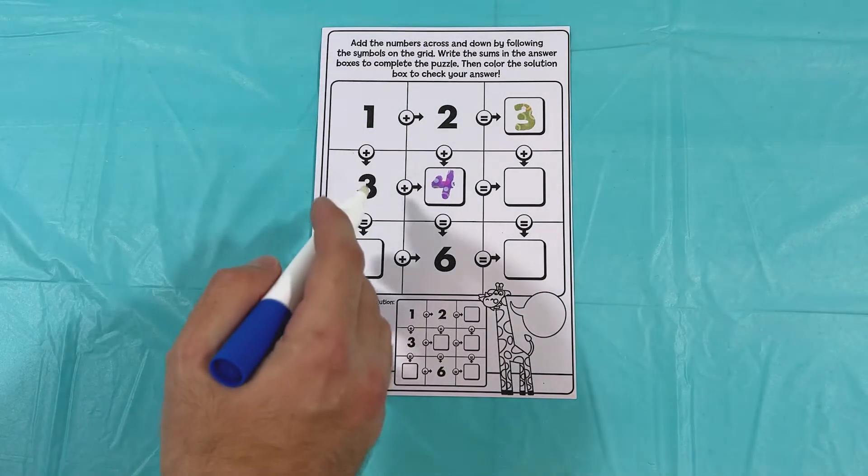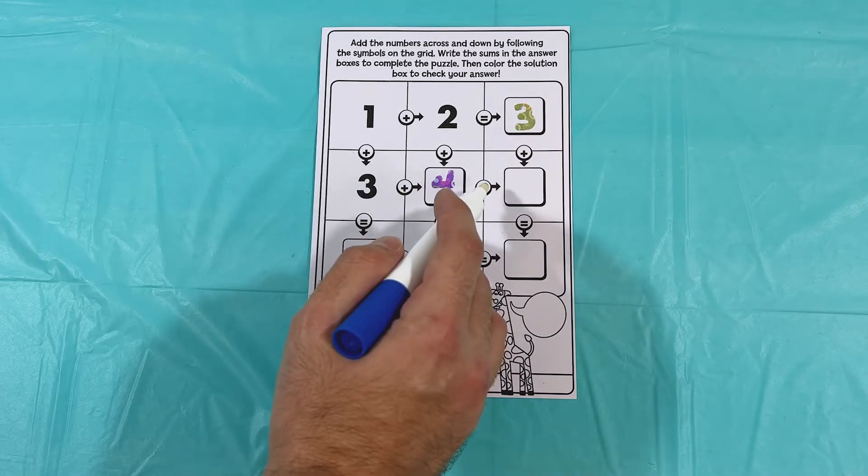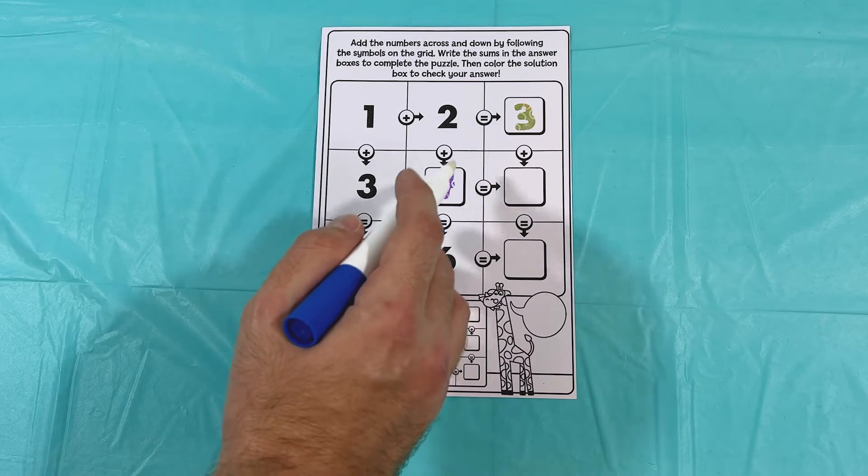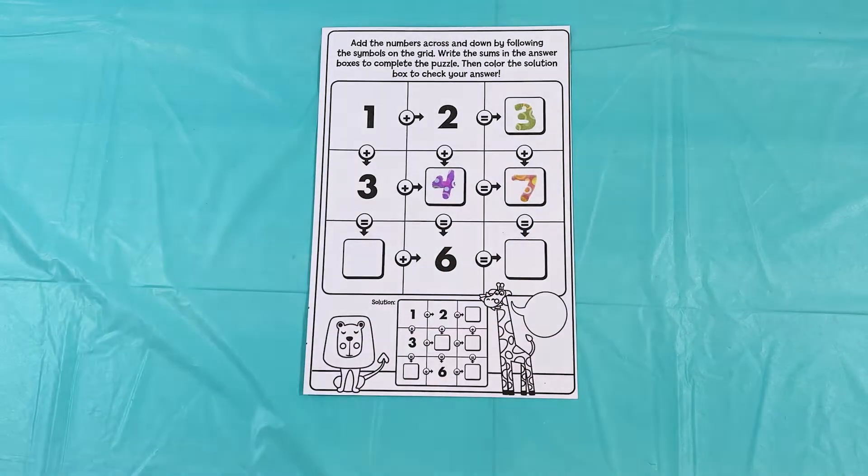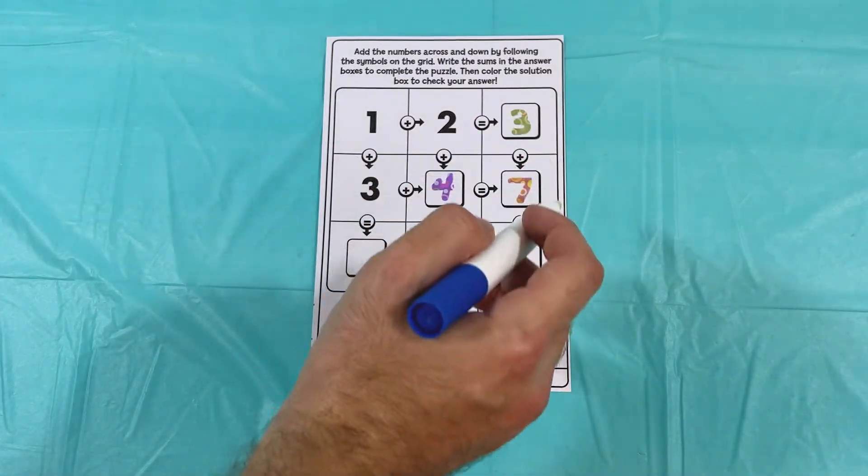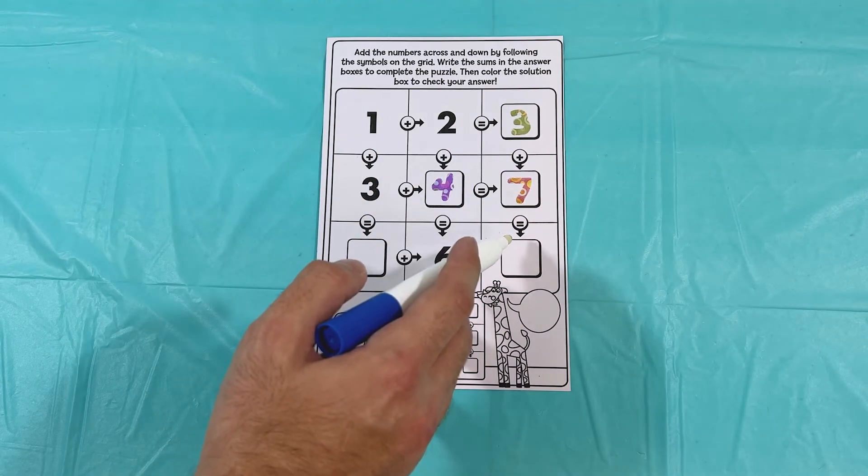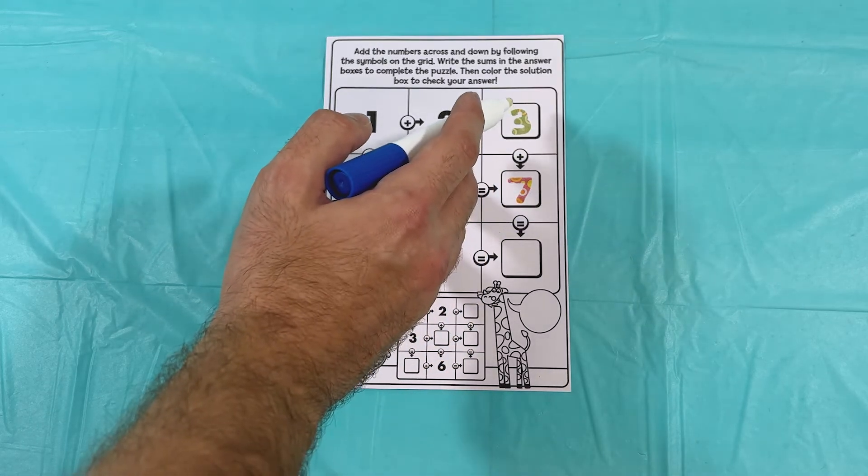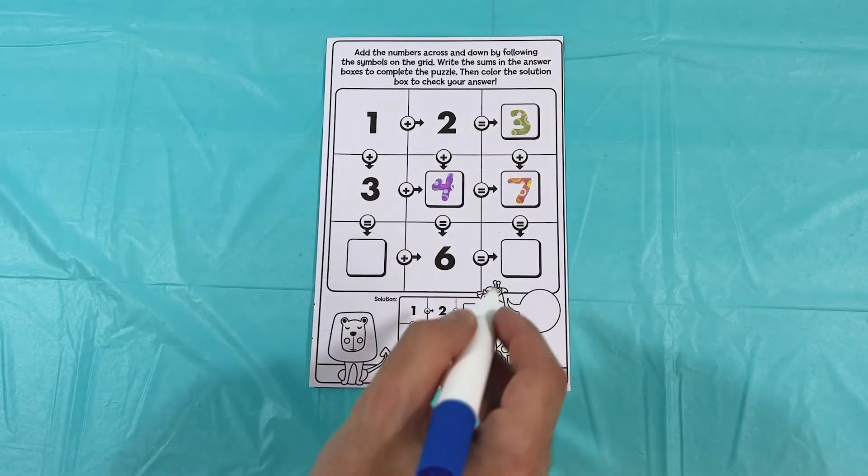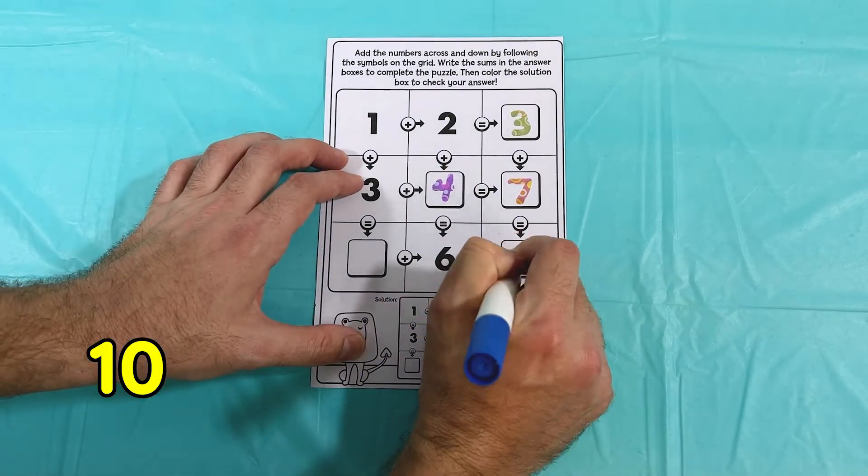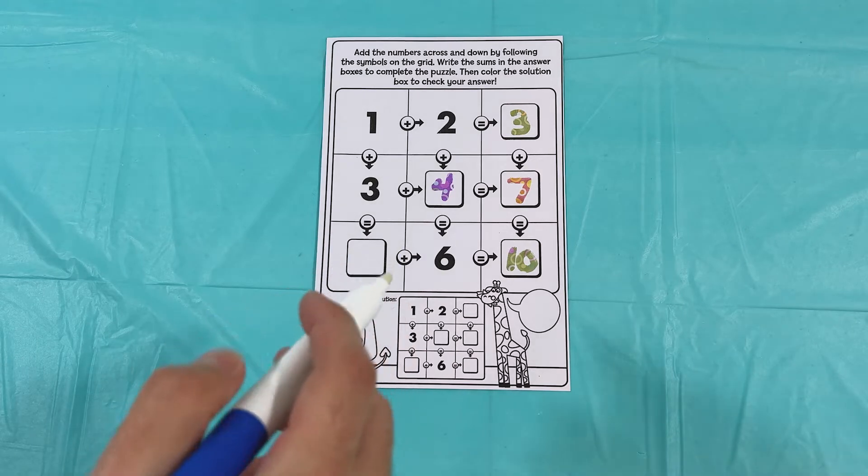Next we have the three here. Three plus four equals four, five, six, seven. Three plus four equals seven. Next we have three plus seven equals, so let's start with the seven and we'll add three. Eight, nine, ten. Three plus seven equals ten.